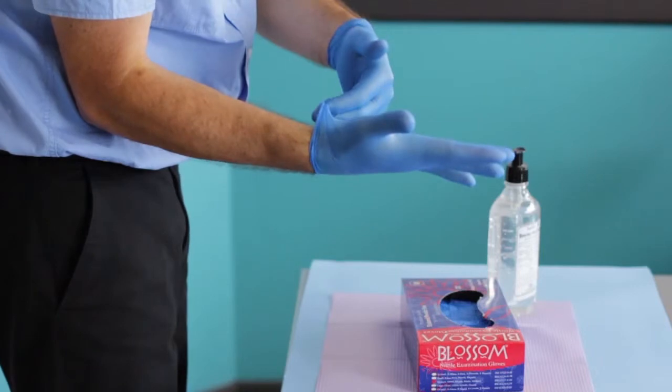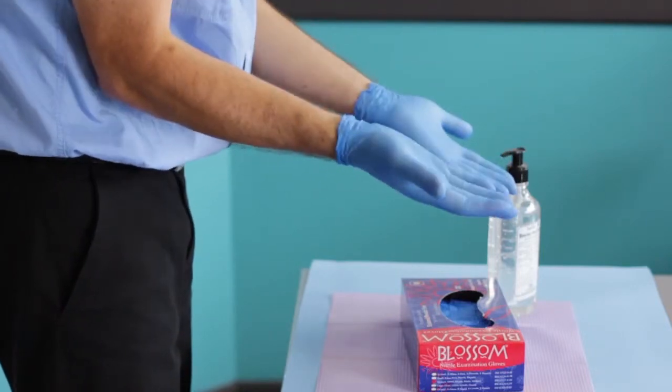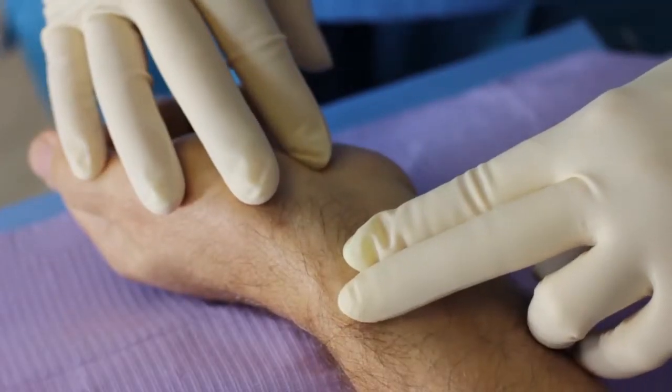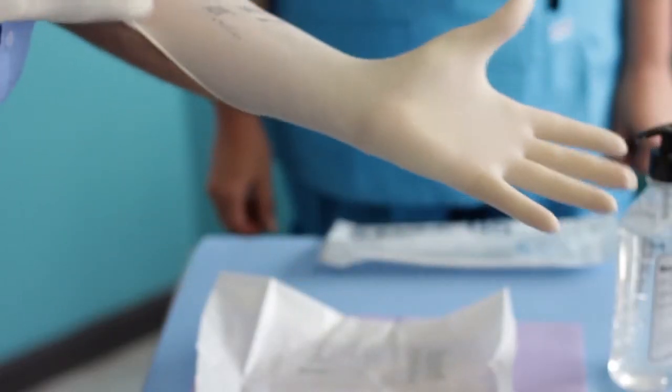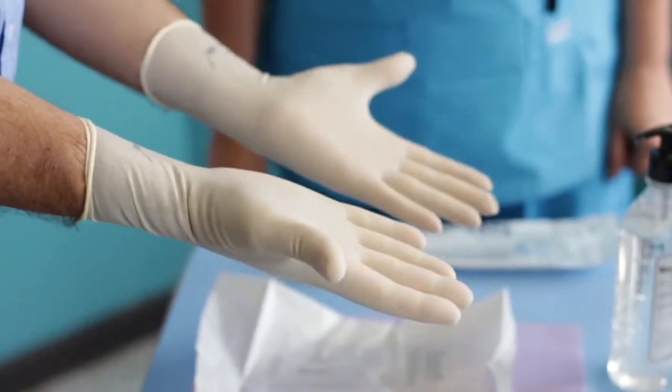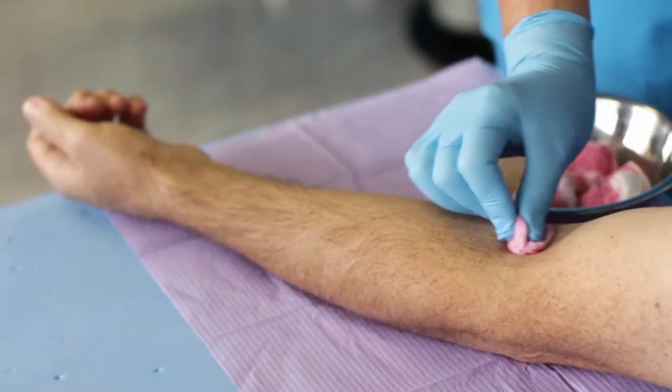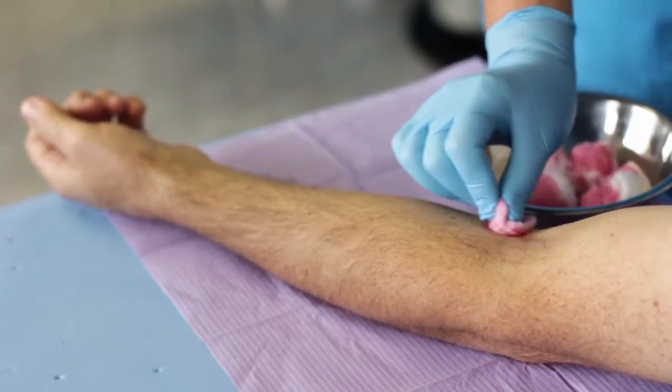Do not touch the venipuncture site after skin preparation. If palpation is absolutely necessary after skin preparation, then sterile gloves must be used prior to palpation. Using swabs saturated with 2% chlorhexidine and 70% alcohol, disinfect the venipuncture site with a scrubbing motion.